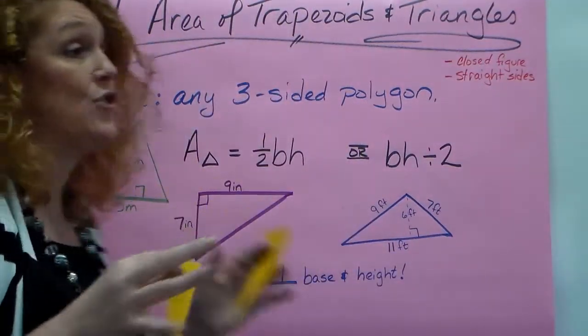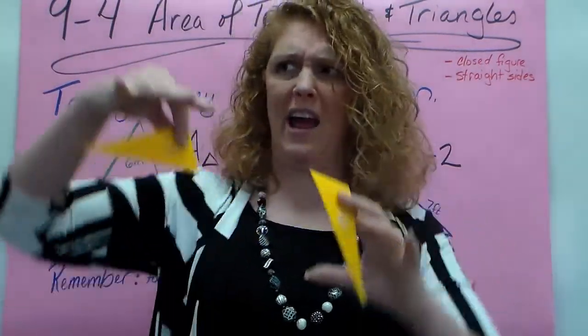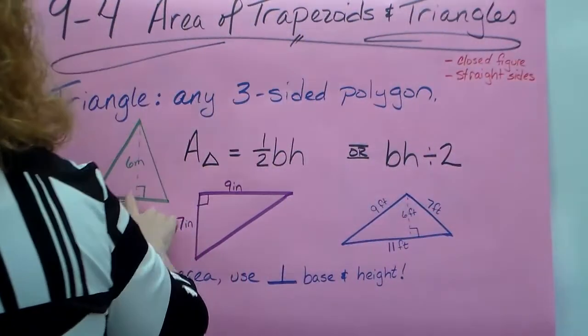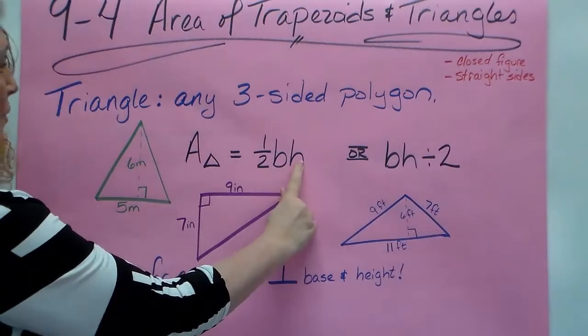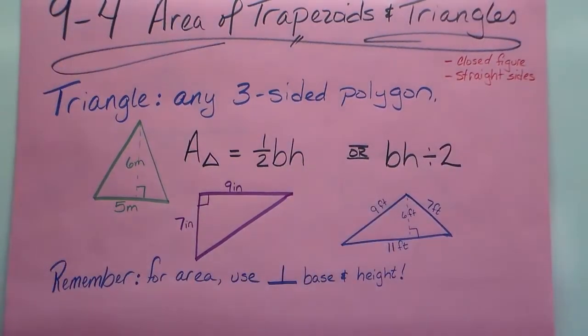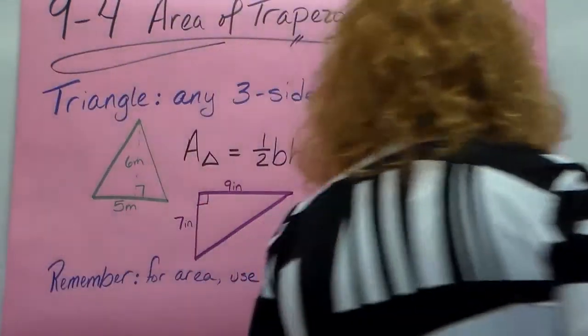So when you're finding - and it works with any triangle, it doesn't matter how squished it is or how long it is - if you can find the base and the height, you always multiply them together and then divide by 2 to find your area. So let's try it for these two.